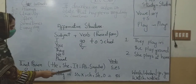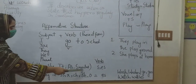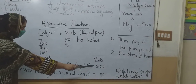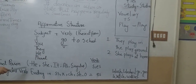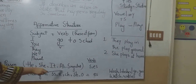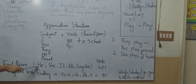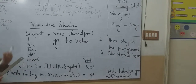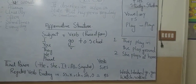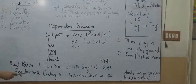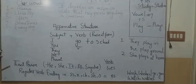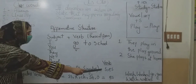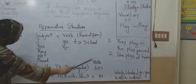With he, she, it, Ali, or any singular noun, we will use S or ES in the verb. These are third person singulars — he, she, it, or any singular name like Aisha or Ikra — someone who is not present right now but whom we are talking about. We will add S or ES to the main verb.